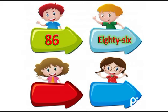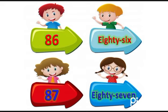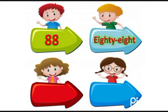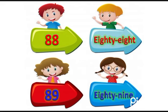Next number, 87, 87, 87, E-I-G-H-T-Y-S-E-V-E-N. After that, 88, 88, E-I-G-H-T-Y-E-I-G-H-T. And the last number is 89, 89, E-I-G-H-T-Y-N-I-N-E.